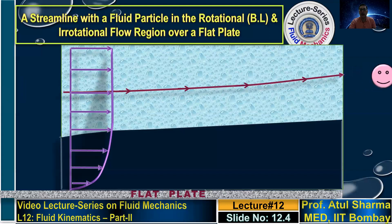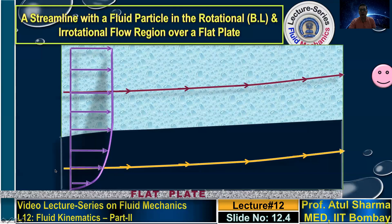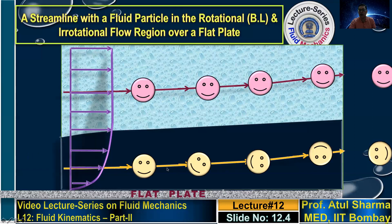If you consider a streamline inside the boundary layer, as the fluid particle translates, it is also rotating. This is illustrated by a smiling face cartoon: as it translates, it rotates in the clockwise direction. For a fluid particle inside the boundary layer, there is an unbalanced shear force because the velocity gradients on the upper and lower sides differ, and this unbalanced shear force leads to clockwise rotation of the fluid particle.